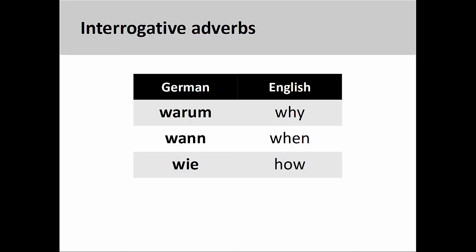Interrogative adverbs differ from interrogative pronouns in that they ask questions about the activity of a noun, the reasoning why an activity is performed, when it was performed, and the manner in which it was performed. Some interrogative adverbs are 'warum' (why), 'wann' (when), and 'wie' (how).